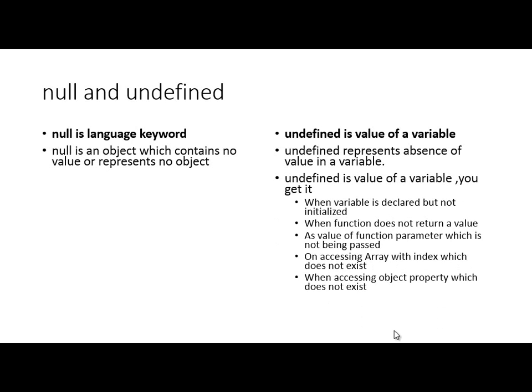You get an undefined value for a variable when you declare a variable but do not initialize it, when a function returns no value, or when a function parameter is not being passed — as you know, in JavaScript a function can accept a variable number of parameters. You also get undefined when accessing an array element with an index that does not exist, or when you try to access an object property which does not exist. To summarize: Null is an object which contains no value and is a language keyword, whereas Undefined is a value of a variable that you get in these stated scenarios.